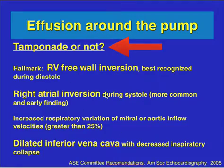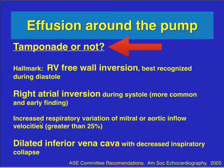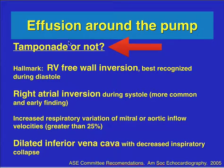In summary, when evaluating pericardial effusions in the emergency room or ICU, what's important is not just whether there is an effusion — though you do need to learn the distinction between pleural and pericardial effusions — but whether there is tamponade. The hallmarks are RV free wall inversion best recognized during diastole, right atrial inversion during systole as a more common early finding, and increased respiratory variation of mitral and aortic inflow along with a dilated inferior vena cava as less common findings. These are the things you're looking for once you identify the pericardial effusion.